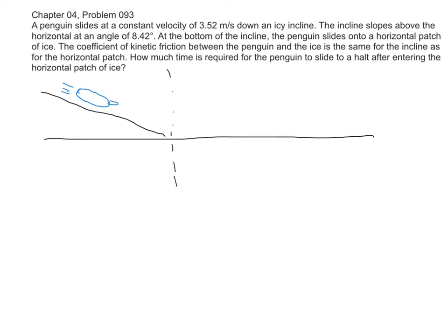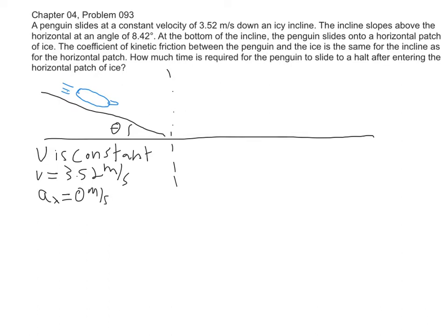There are two sections here. In the first section, he has a constant velocity while going down the slope at 3.52 meters per second. We're also given the angle theta. The fact that V is constant tells us that acceleration is zero down the slope. We're not asked anything about the slope, but instead we're asked how long it takes him to slide to a halt along the flat region — sliding from some initial spot to where he stopped.